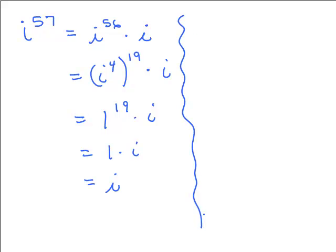Now the fast way — i to the 57th. You divide 4 into 57 and get 19 remainder 1. The remainder of 1 is what's important. It's i to that remainder, so the answer is just i. You can see the convenience of paying attention to the remainder.